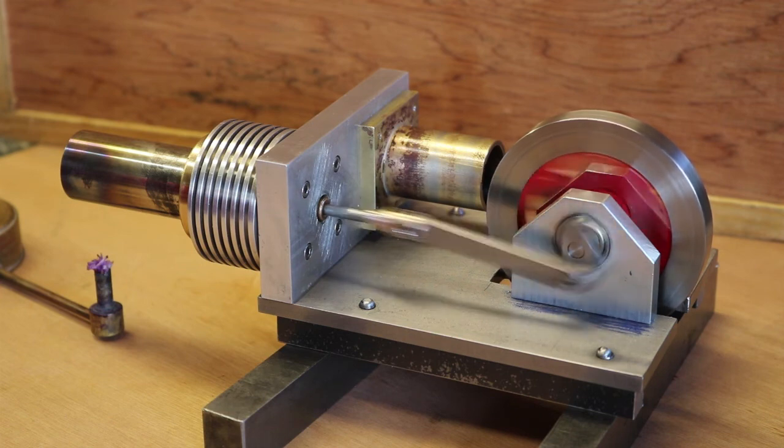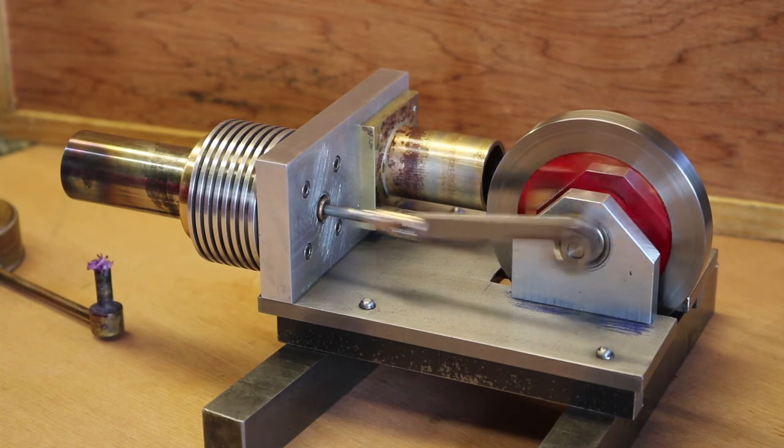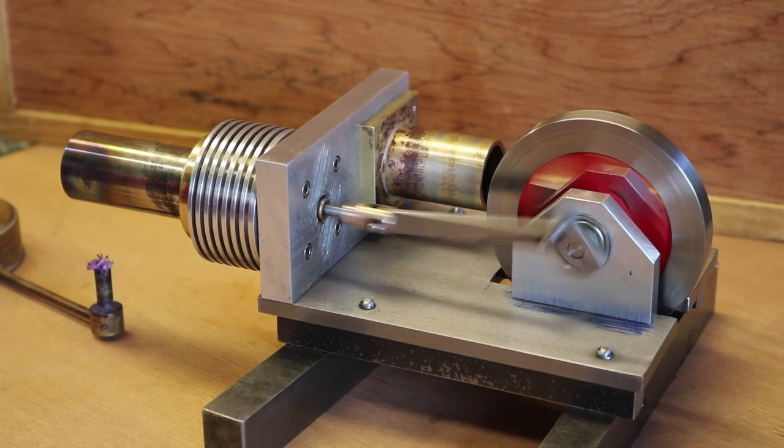So there we have it. A little simple Stirling engine, what we call a gamma configuration engine running very straightforwardly.